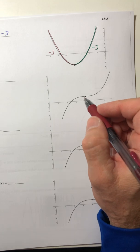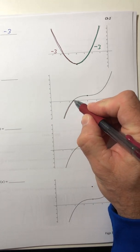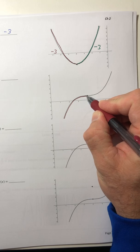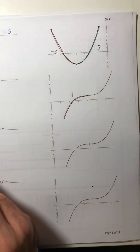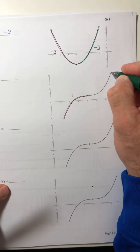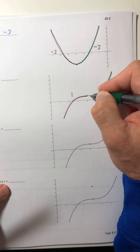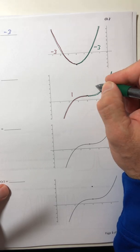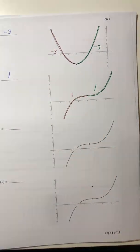Okay. For part C as X approaches positive four from the left, looks like you're going to run into Y equals one as X approaches four. And then from the right side, as you get closer and closer to X equals four, you're getting closer and closer to Y equals one. So the limit is one.